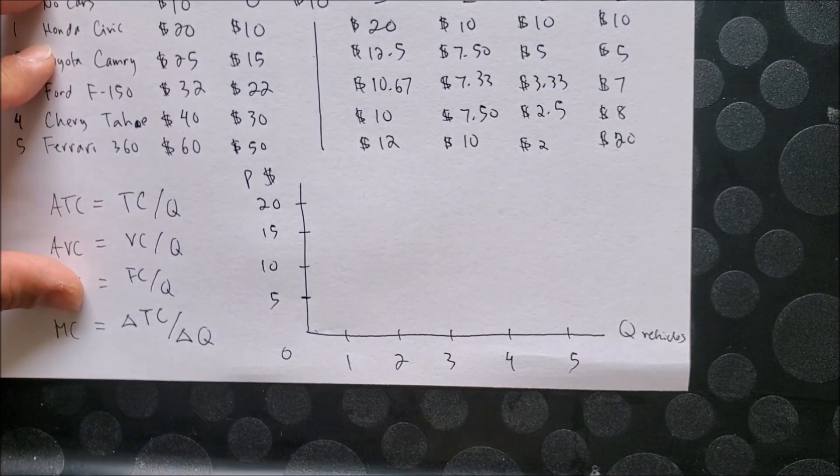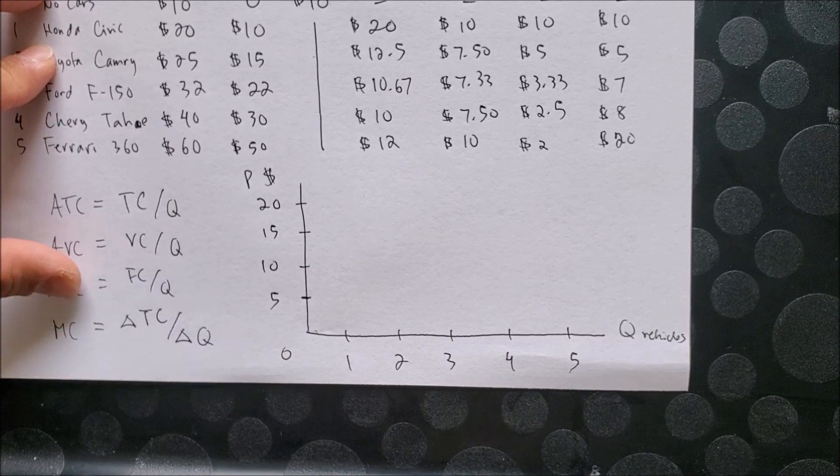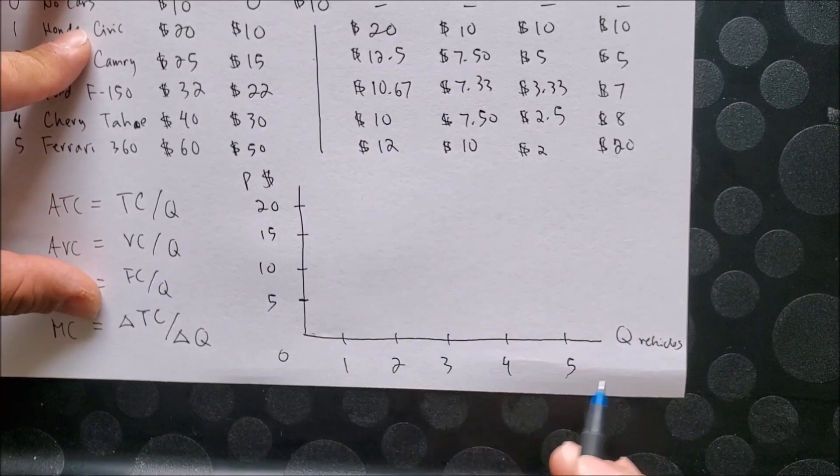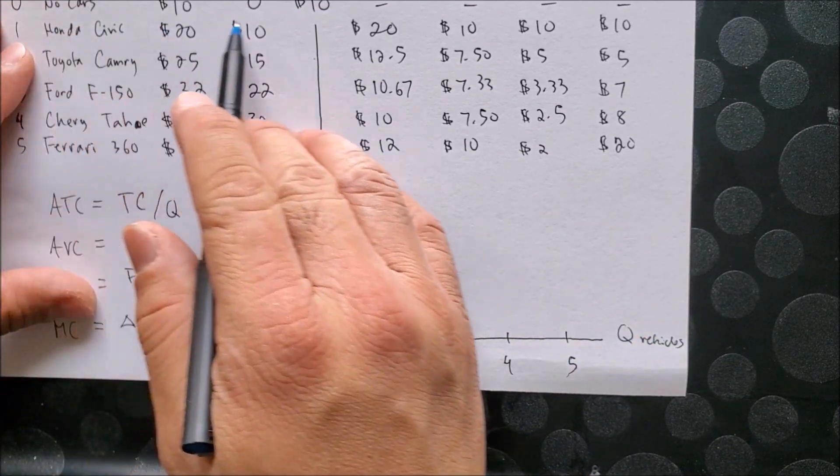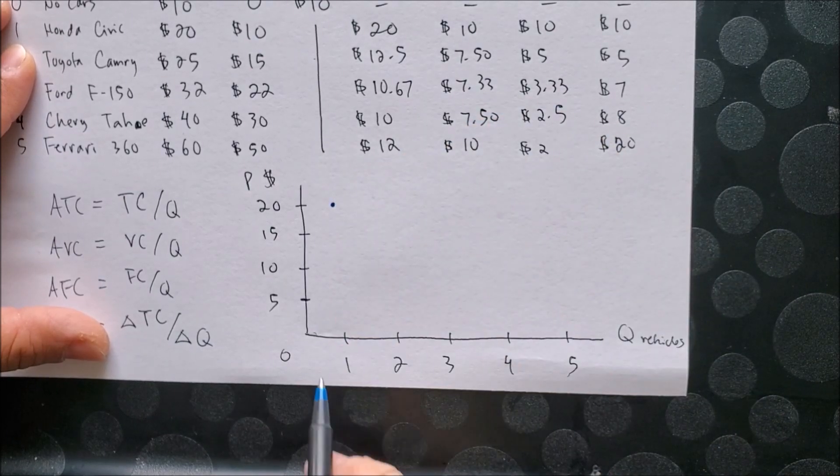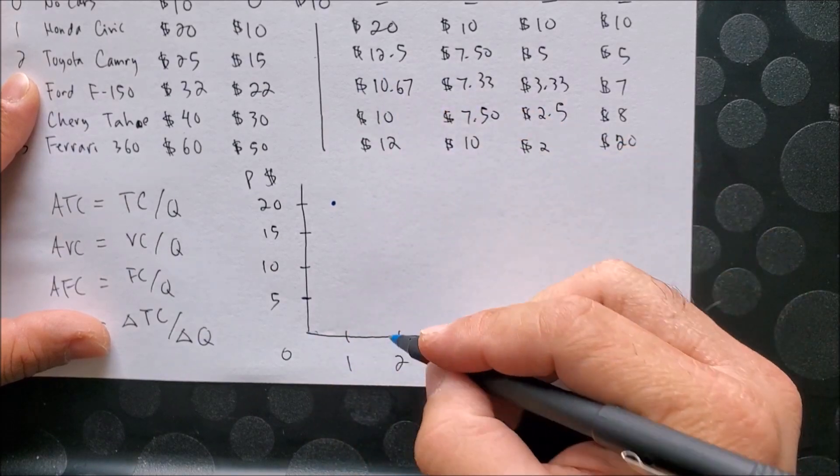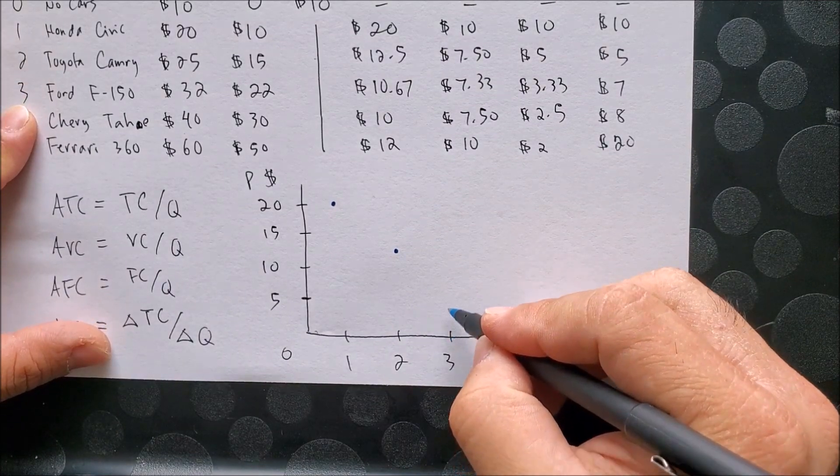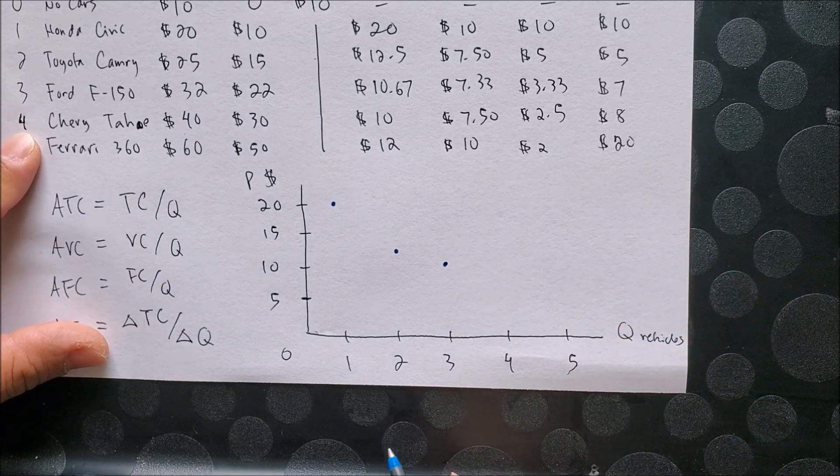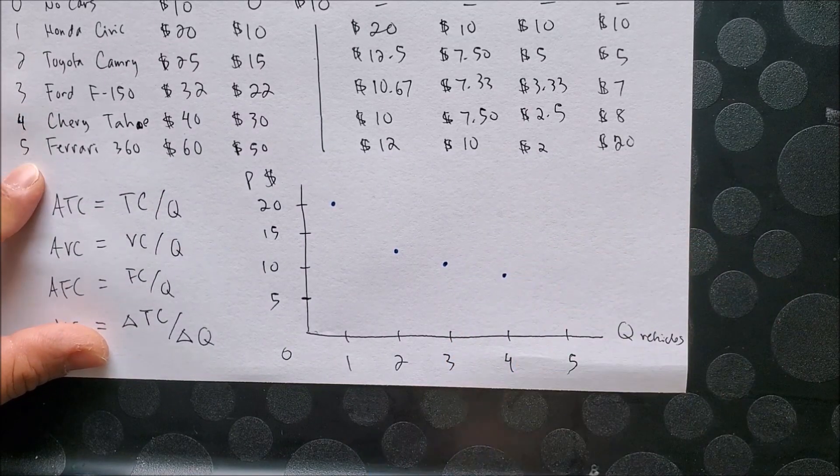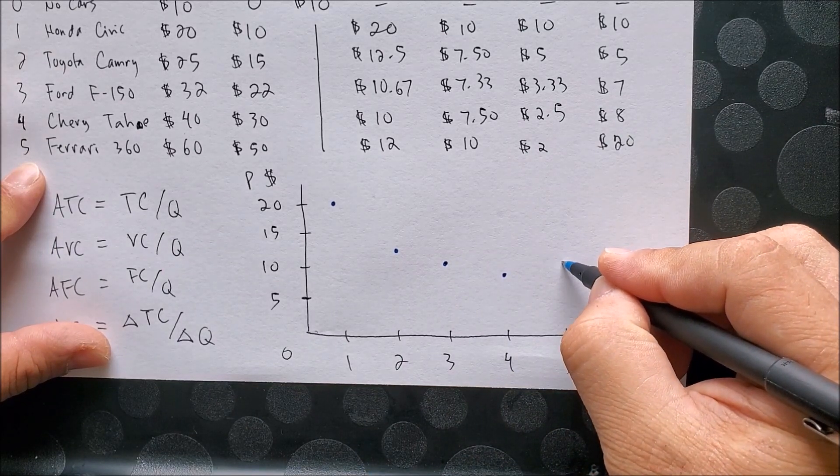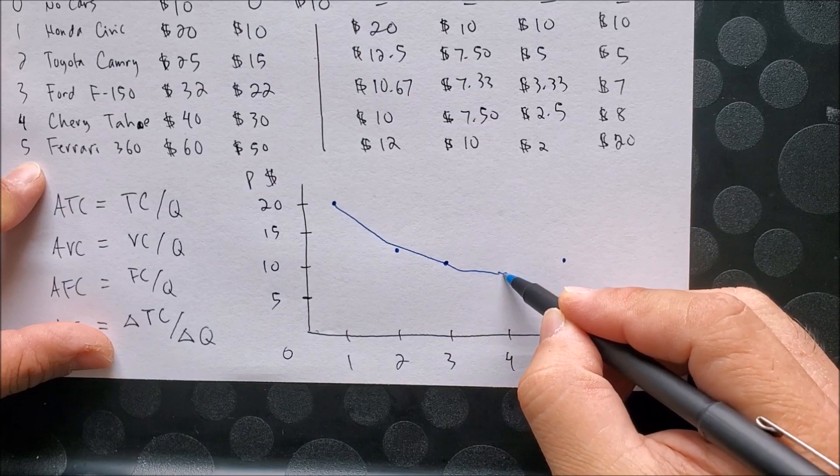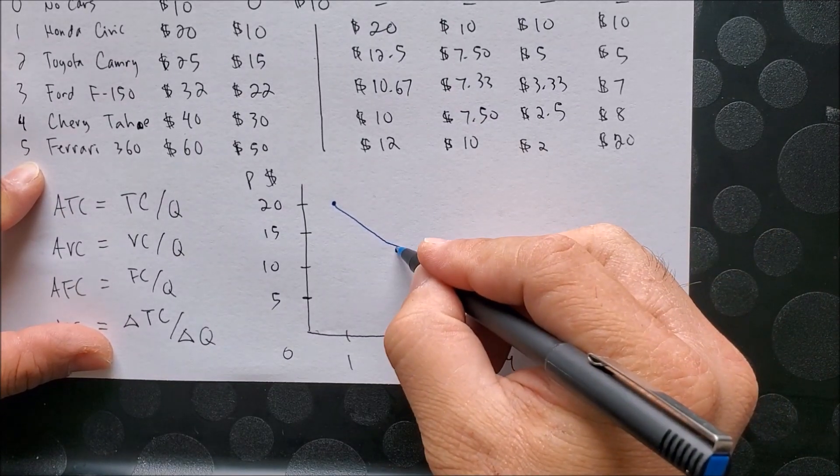So now I'm going to use hopefully my different color markers or pens to illustrate each column. Let's first graph ATC where we're going to have, in this case, one vehicle in $20, two vehicles in $12.50, three vehicles in $10.67, four vehicles in $10, five vehicles in $12. So somewhere around that point there. And we can draw our curve as such and label this ATC.